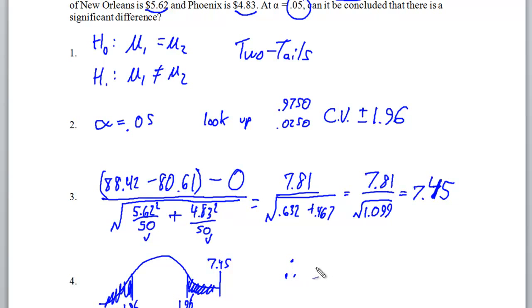Therefore, for step five, we're going to reject the null hypothesis that these two cities are the same, and they're definitely not the same, according to this data. All right, copy this down, pause it, and I'll move on to the next problem.